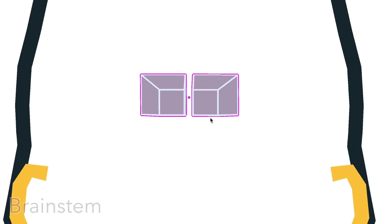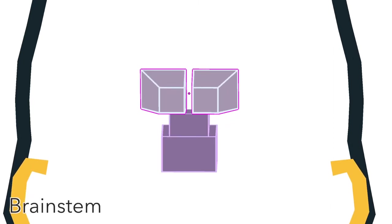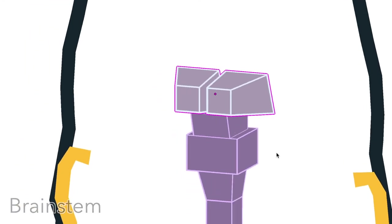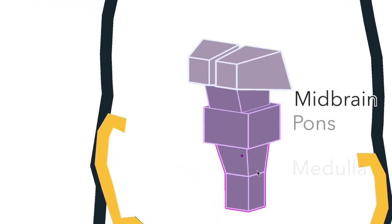Directly under the thalamus is the brain stem, which connects the brain to the spinal cord. It has three parts, the midbrain, pons and medulla.